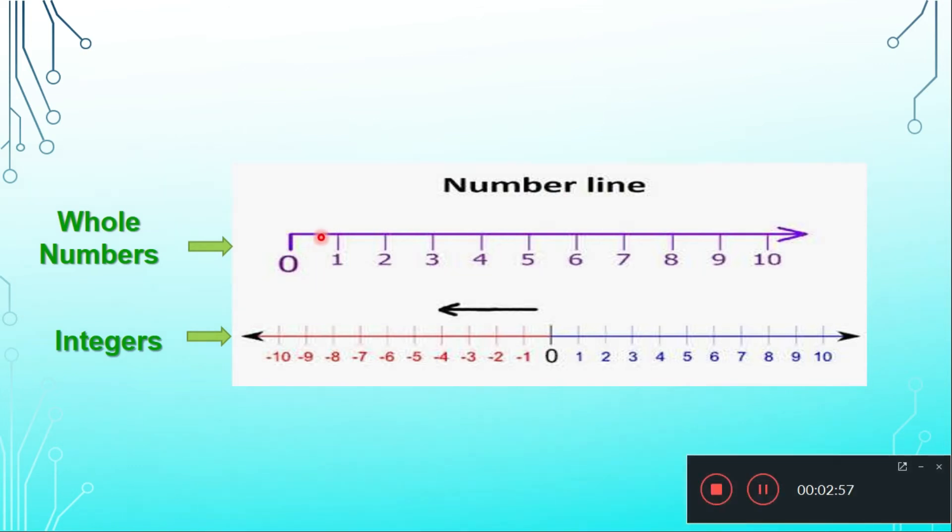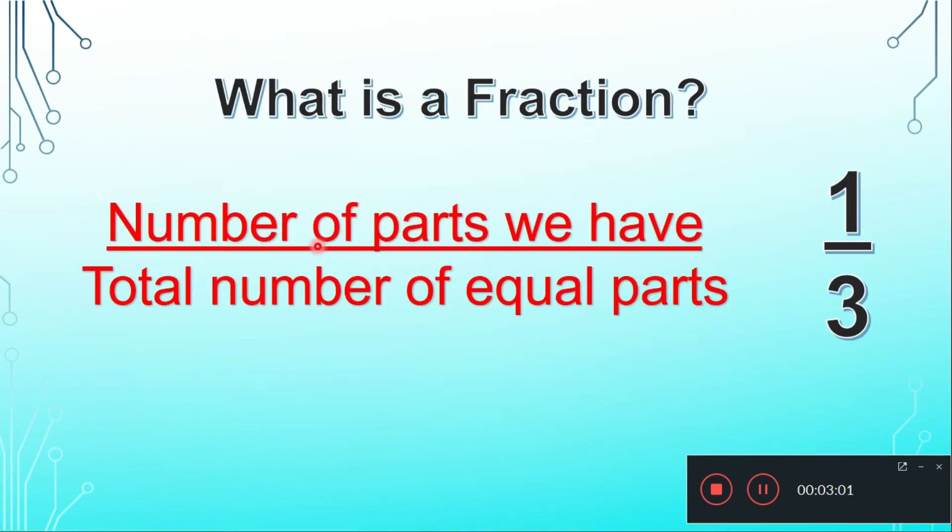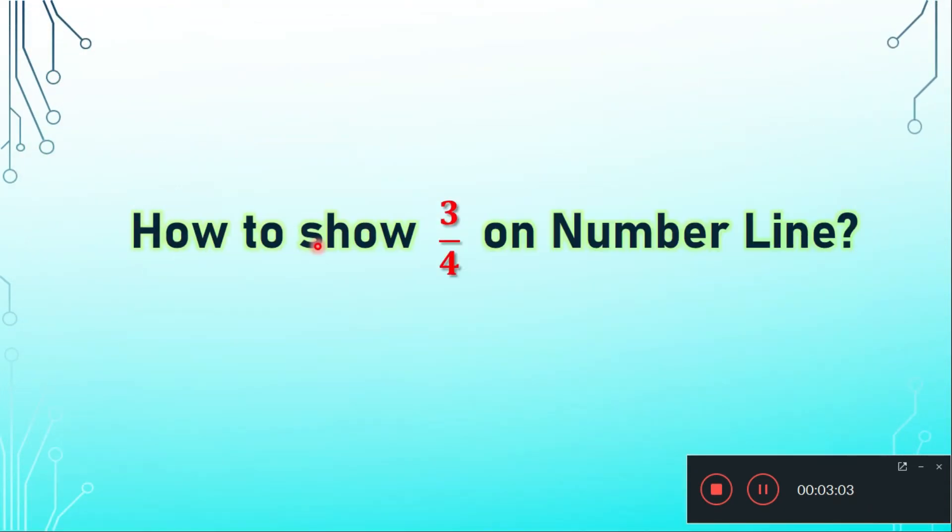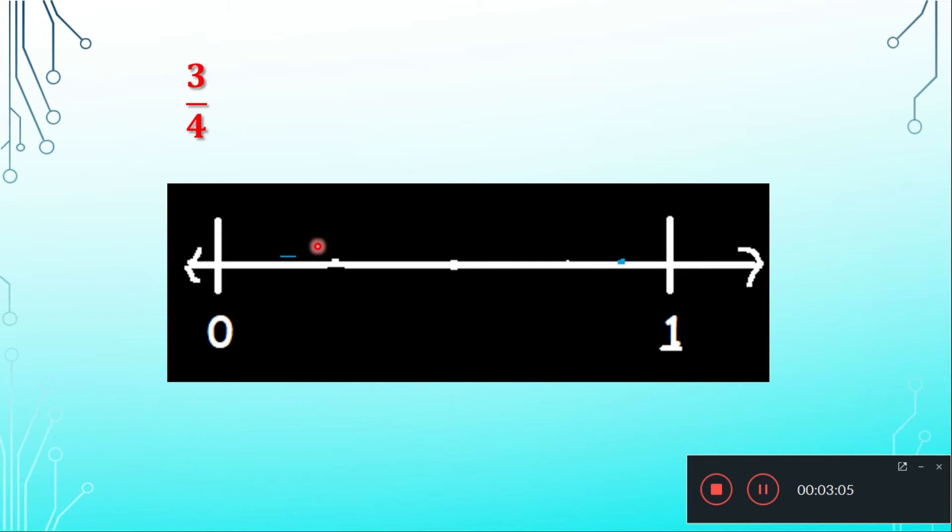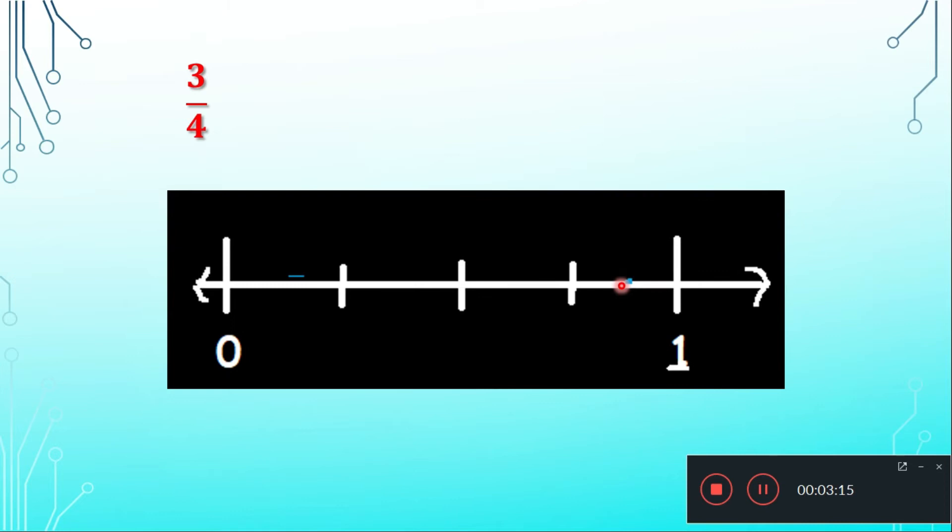To show the fraction 3 by 4 between them, so here I have the number line in which I have marked 0 and 1. I have enlarged it or magnified it. Now next step, children, as we have 4 as a denominator, so we will divide this whole number line into four equal parts.